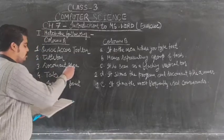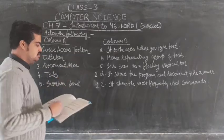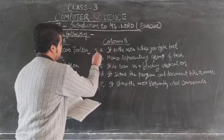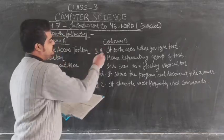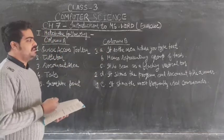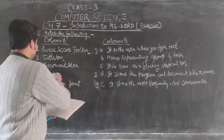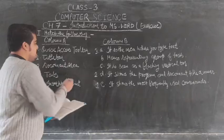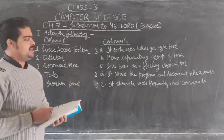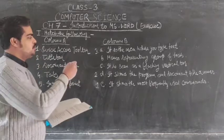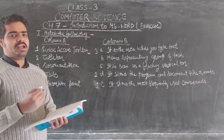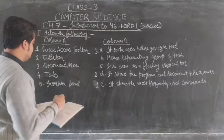The third one is the document area. It will match with option A. It is the area where you can type the text.